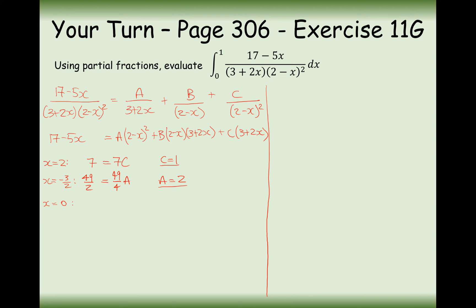So instead we substitute in a really easy value — let's use x equals 0. On the left-hand side we get 17. On the right-hand side we get 4A from the squared term, then 6B from the B term, and 3C from the C term.